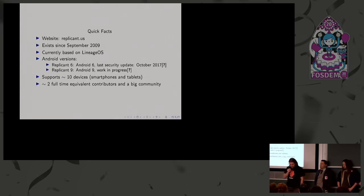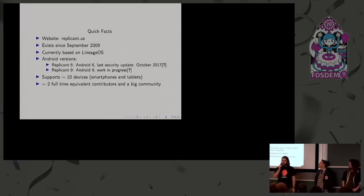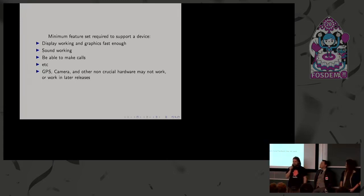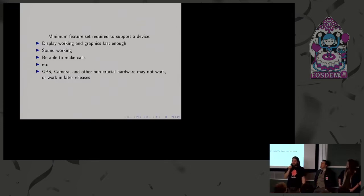On Replicant 6 we support about 10 devices — smartphones and tablets — and we have about two full-time equivalent contributors. As a fully free distribution, we still want a minimum set of features to make it useful: display working, graphics fast enough to be usable, phone calls, sound, and so on. Some auxiliary features like GPS or camera are lower priority, but we still try to make them work.